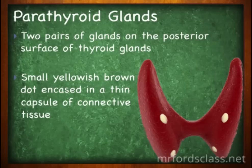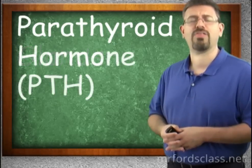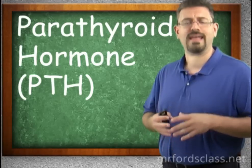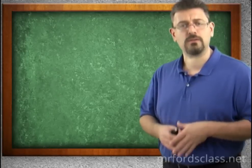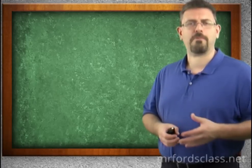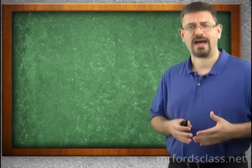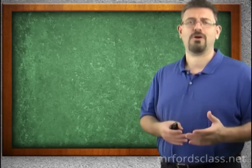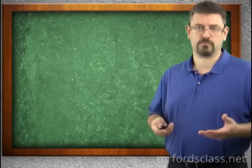On the posterior aspect of the thyroid gland are the parathyroid glands — two paired glands on the posterior surface of the thyroid gland. They're small yellowish-brown dots encased in a thin capsule of connective tissue. They have one hormone that you need to be aware of: the parathyroid hormone, which deals with calcium ion and phosphate ion levels in the blood. Back in the old days, whenever they did thyroid surgery, they didn't even know these little glands were there, and if they cut them off, the patient died.